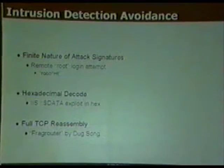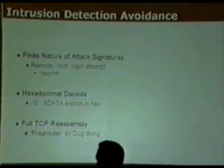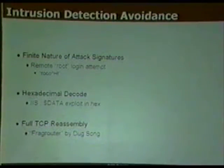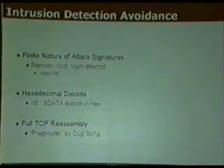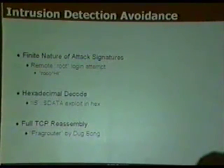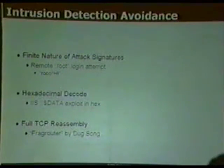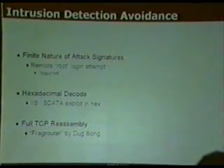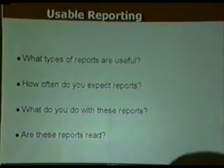Most products have progressed to the point where they decode hex on the fly, but for a long time they could not. The old IIS colon-colon dollar-data exploit written in hex could easily bring down an IIS server. Products are also getting better at reassembling fragmented TCP packets, which used to be a very efficient way to evade network-based IDS. One tool that did fragmentation evasion very well was Fragrouter by Doug Song.